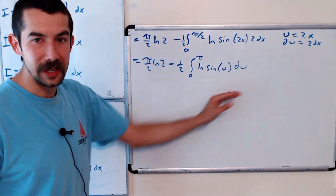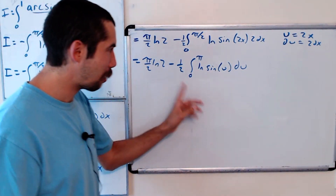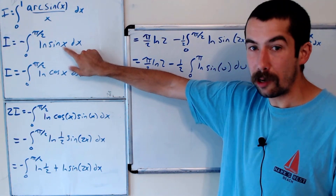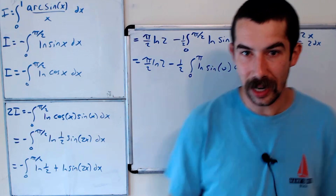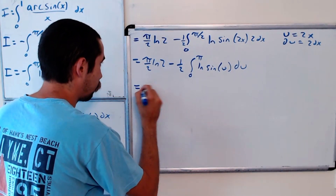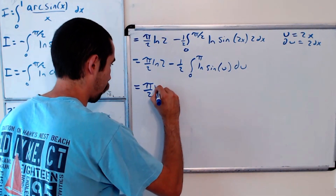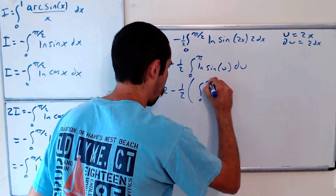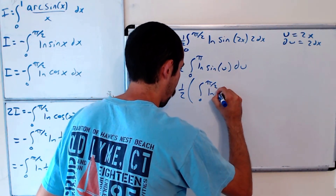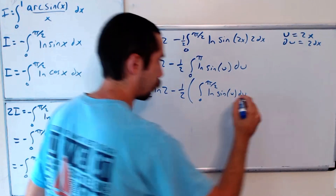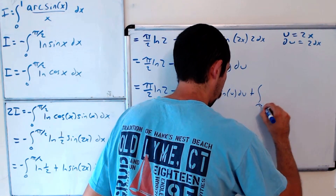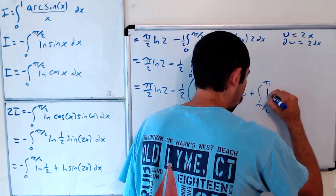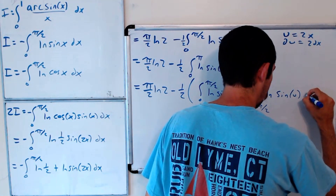We're going to break up this integral at the halfway point pi over 2, because the integral from 0 to pi over 2 of ln of sine of u du is exactly I. So we split it into the integral from 0 to pi over 2 plus the integral from pi over 2 to pi of ln of sine of u du.